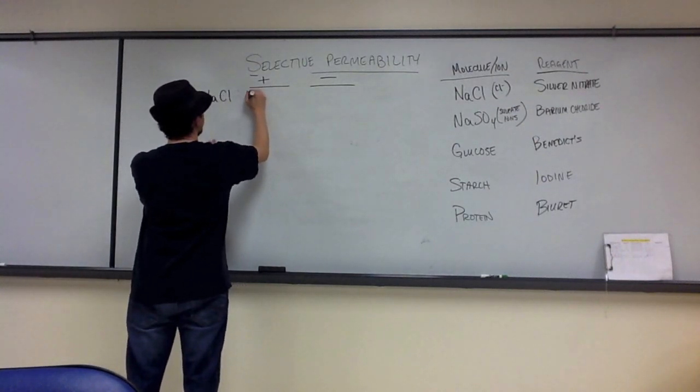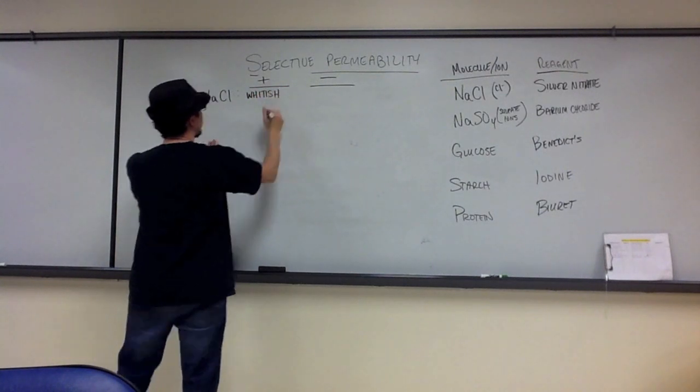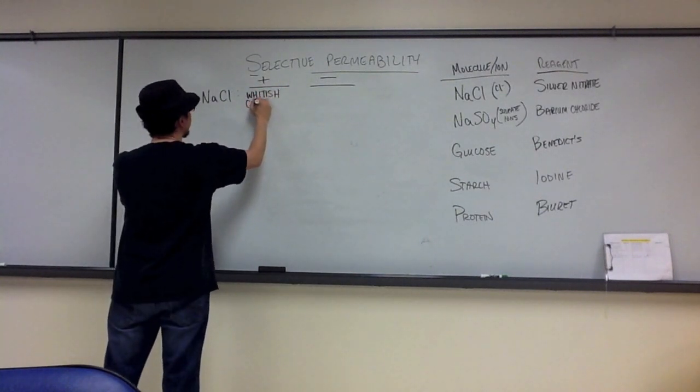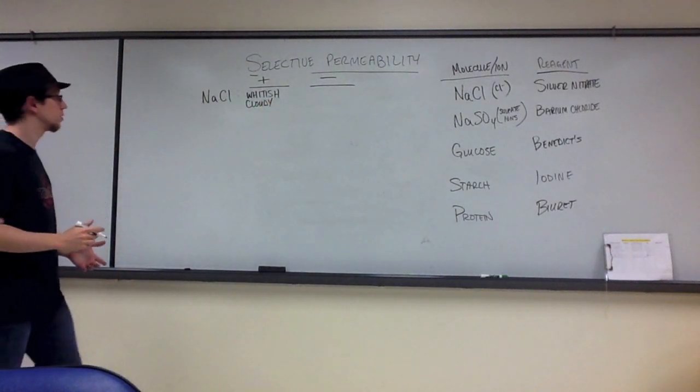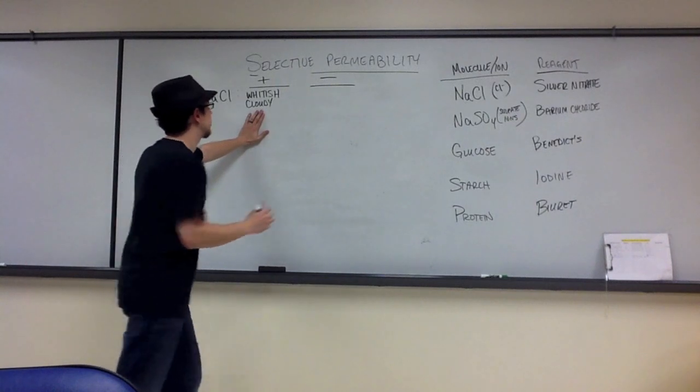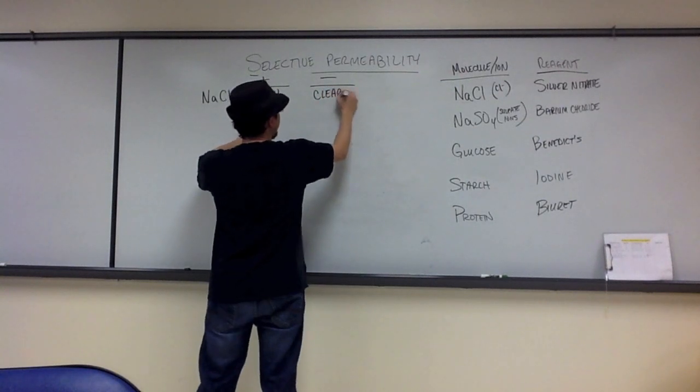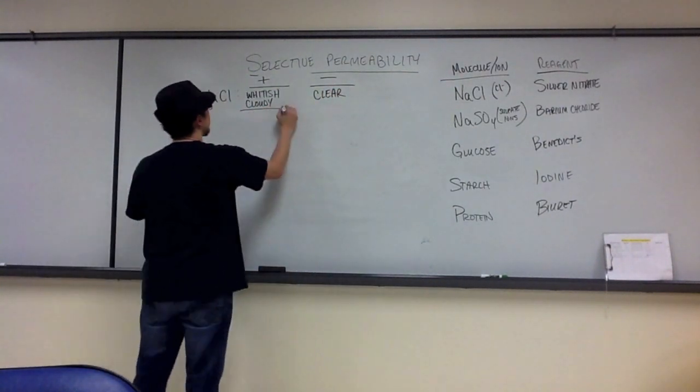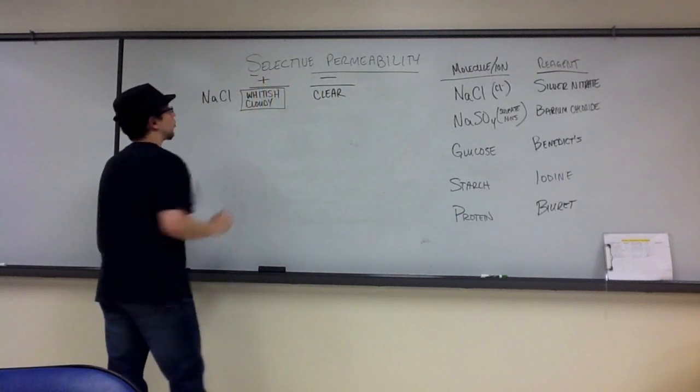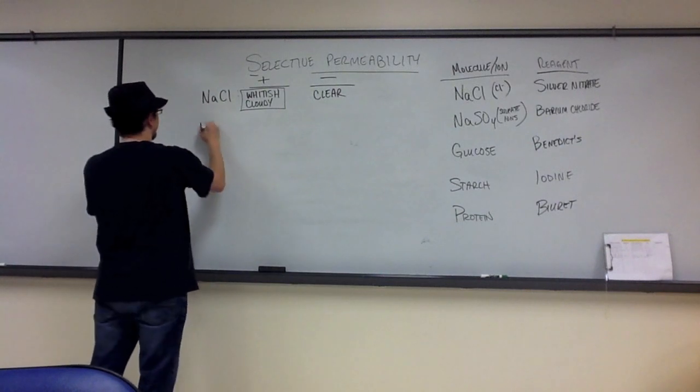If it's positive and chloride ions are present, we expect to see a whitish, cloudy color or substance. This is in one of those video protocols that I've shown. If it's not present, then we expect it to be clear. But we've already determined that it was present, so you should have hopefully seen this whitish, cloudy color.